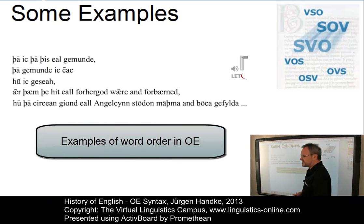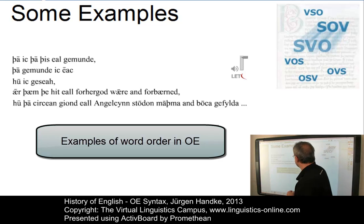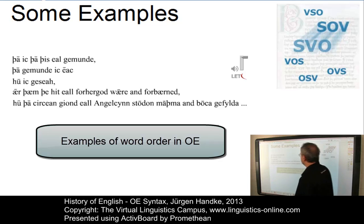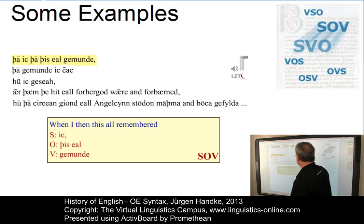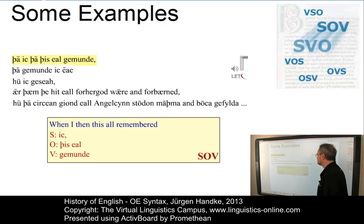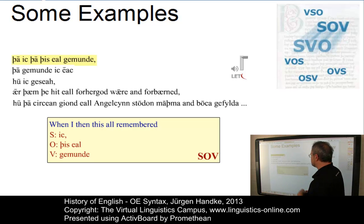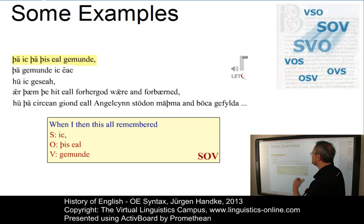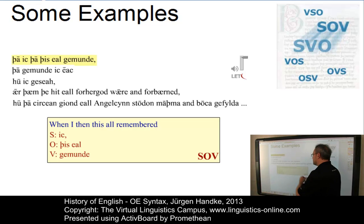Here is a text and let's quickly perform a short syntactic functional analysis. This is the first sentence of the passage. Here we can observe an SOV structure with the verb Jemunde in the final position, the subject 'ic' in the first position, and the object between subject and verb.